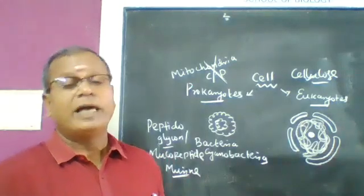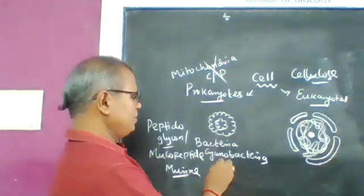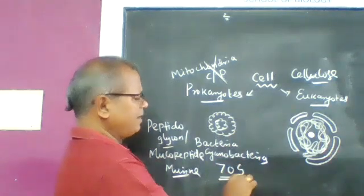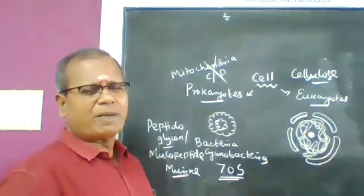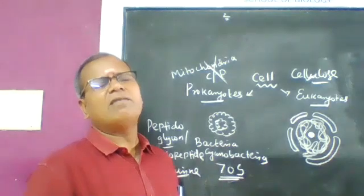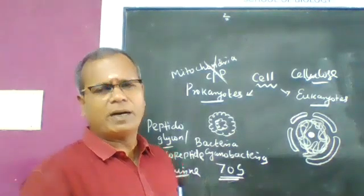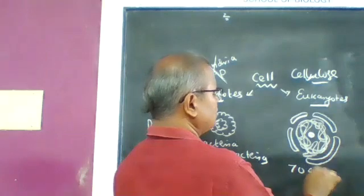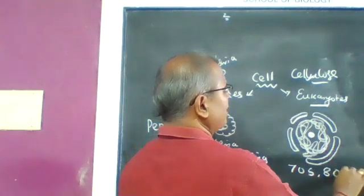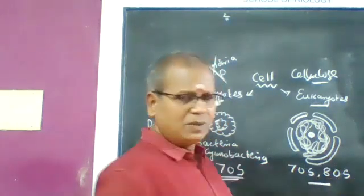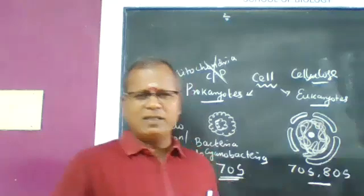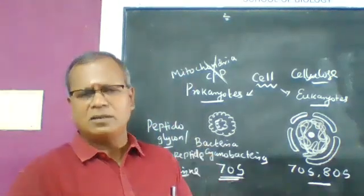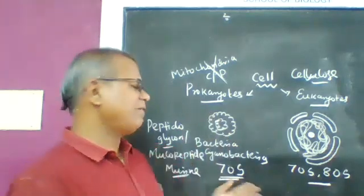In prokaryotic organisms, 70S ribosomes are present — where 'S' represents the Svedberg unit. In eukaryotic organisms, both 70S and 80S ribosomes are present. The 70S ribosomes are found in mitochondria and chloroplasts, while 80S ribosomes are found in the cytoplasm.